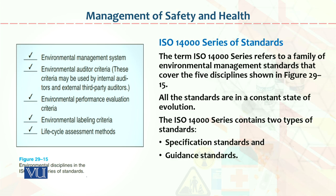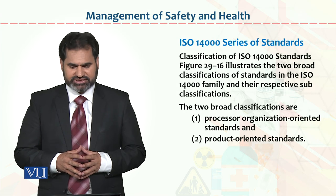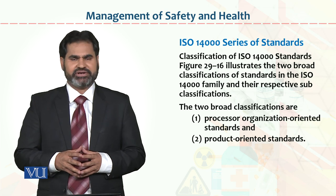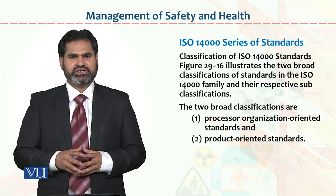The ISO 14000 series of standards includes specific standards and guidance standards covering organizational environment, life cycle assessment, environmental performance evaluation, environmental audit, and environmental management systems. The ISO 14000 series deals in two broad classifications: process or organization-oriented standards, and product-oriented standards.